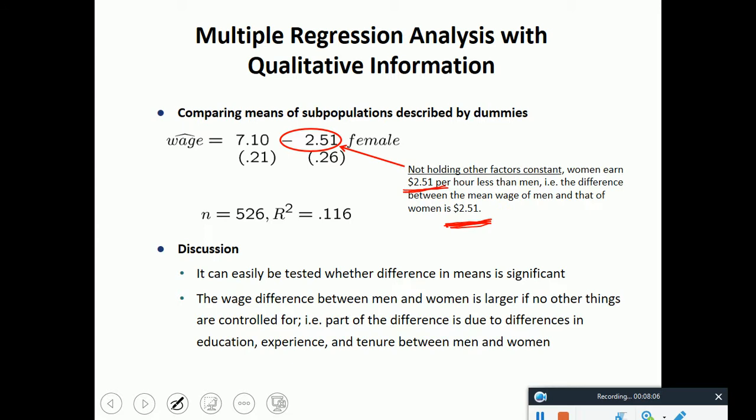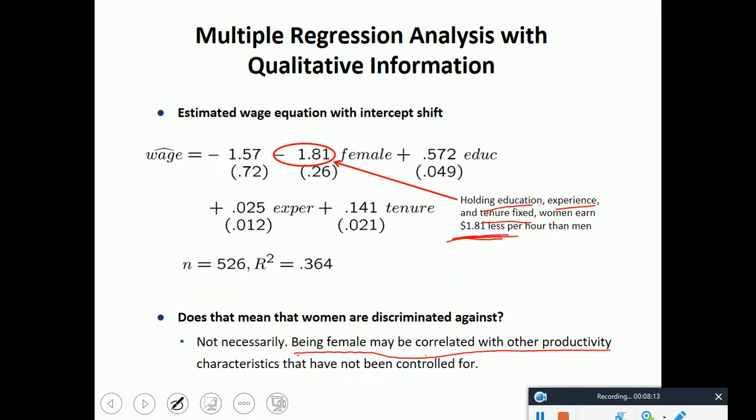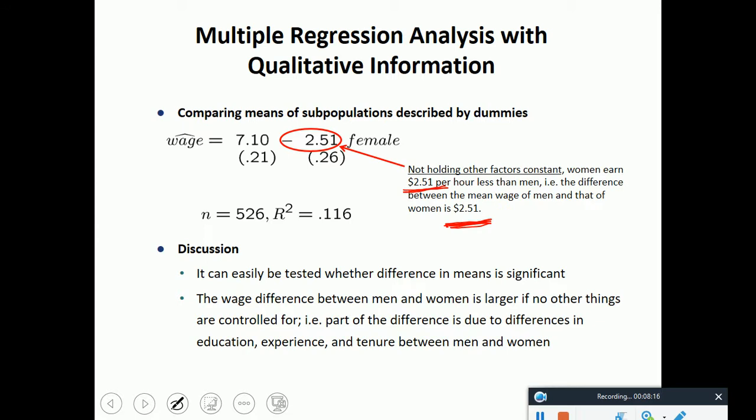It can easily be tested whether the difference in means is significant. We can do a t-test. It's like beta hat minus 0 divided by the standard error. That way we can test whether they are significant or not. Wage difference between men and women is larger if no other things are controlled for. Part of the difference is due to differences in education, experience, and tenure between men and women.